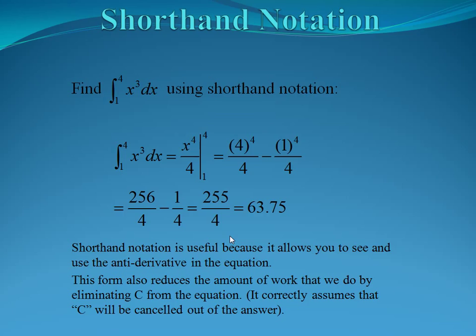Using the same method but with shorthand notation, we write the integral from one to four of x cubed dx, then write the antiderivative x to the fourth over four from one to four — the same bounds. We don't need to write the c, because it cancels with our bounds. So that equals four to the fourth over four minus one to the fourth over four, giving us 63.75. The shorthand notation is useful because it shows the antiderivative in the equation and eliminates c, which always cancels out of our answer.